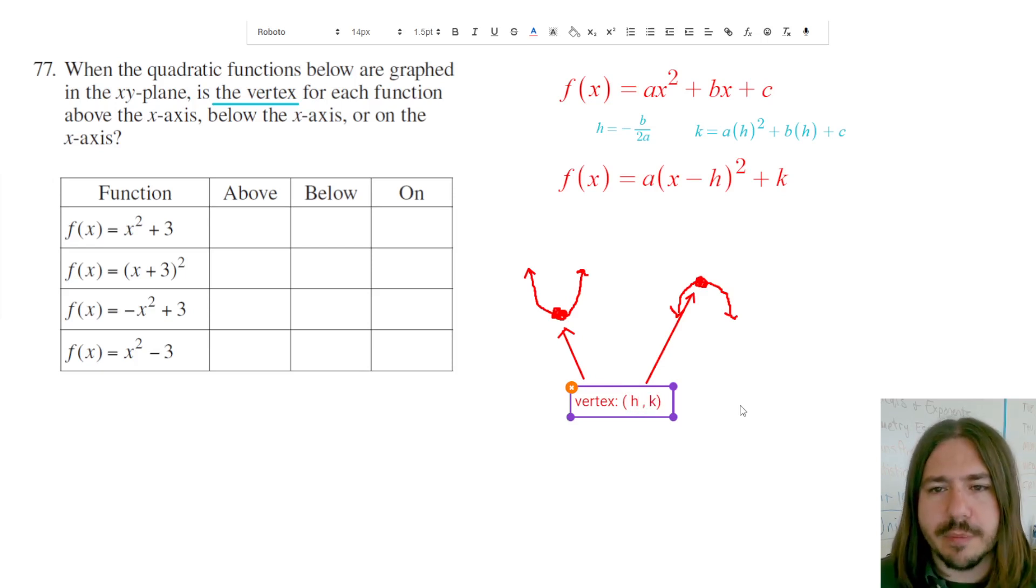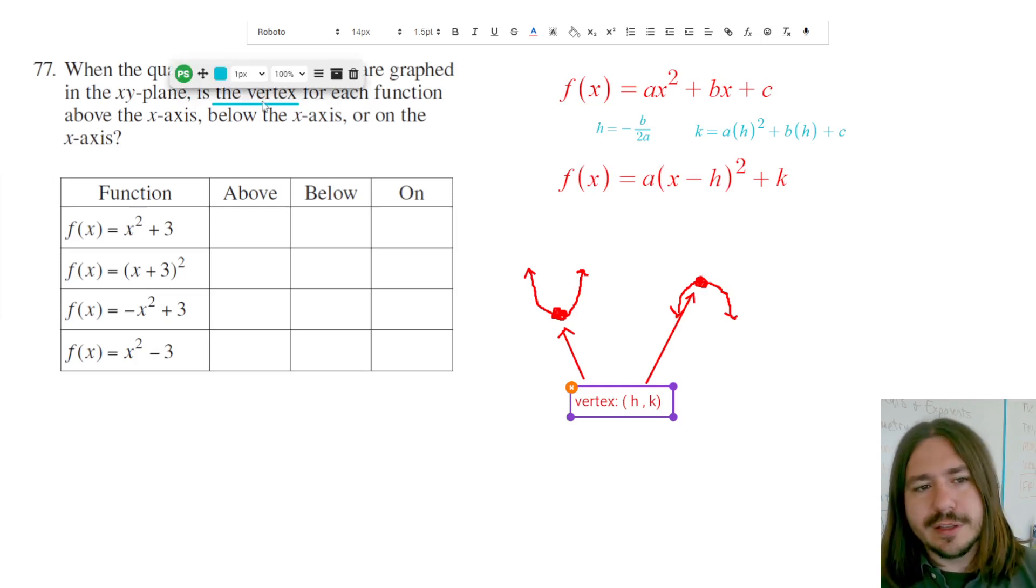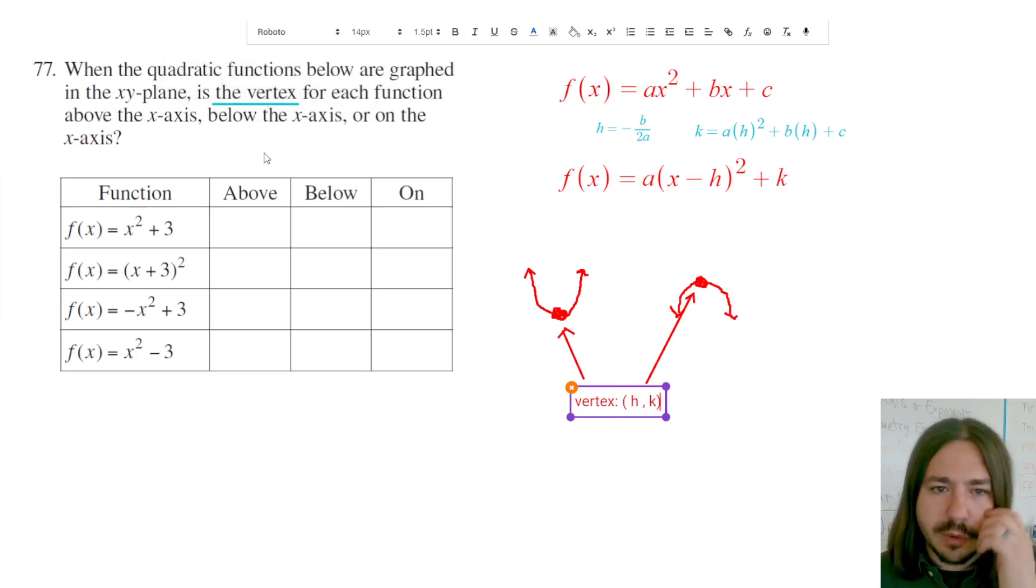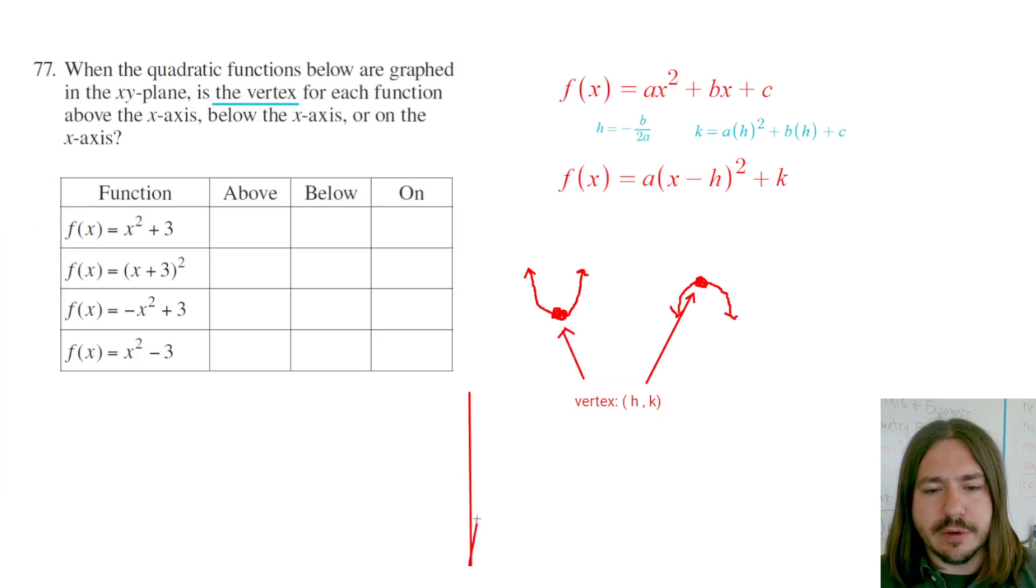So when I'm talking about h, I'm talking about k up here, I'm talking about the coordinates of this vertex. And this question is explicitly asking, is it above or below the x-axis? So when you think about the xy plane, you have an x-axis, which is your horizontal axis, and a y-axis. And it's asking if this vertex is above or below the x-axis.